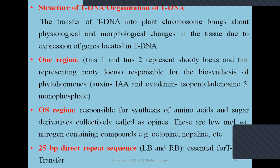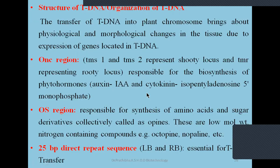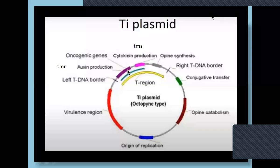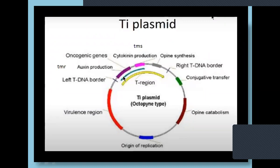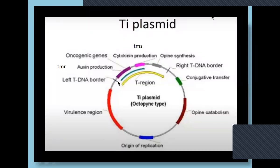Another region is the OS region — OS means Opine Synthesizing region — responsible for the synthesis of amino acids and sugar derivatives collectively called opines. These opines are low molecular weight nitrogen-containing compounds, for example octopine, nopaline, and agropine. Based on what kind of opine they produce, we can classify the different types of Ti plasmid. The T-DNA has a left T-DNA border and a right T-DNA border.